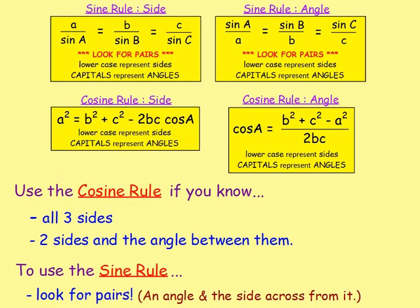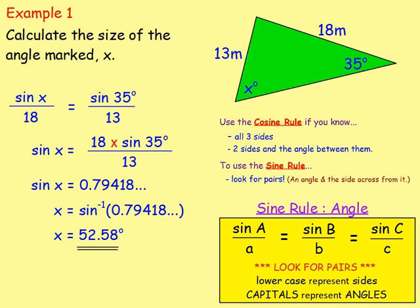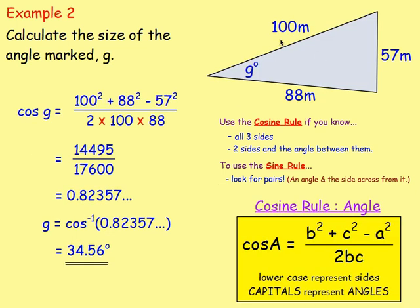Which one do you use? Look at the question and look at your triangle. I always think about the cosine rule first. Use the cosine rule if you know all three sides, or if you know two sides and the angle between them. For the sine rule, look for pairs. With this example — calculate the size of the angle marked X — think about the cosine rule: do you know all three sides? No. Do you know two sides and the angle between them? No. So it's not cosine — it's the sine rule. And because it's an angle, it's the sine rule for working out an angle. For another example where you do know all three sides, straight away — cosine rule for an angle.